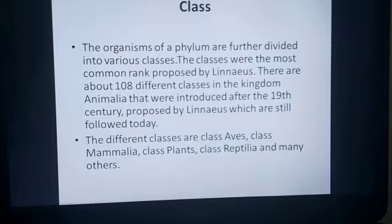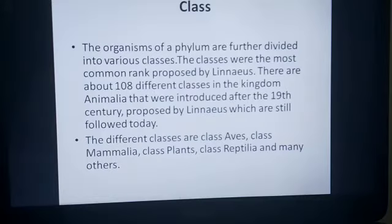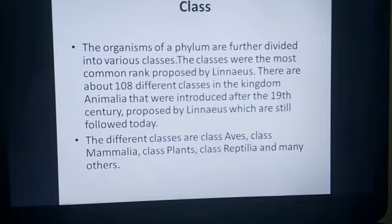Next comes class. The organisms of a phylum are further divided into various classes. Classes were the most common rank proposed by Linnaeus. There are about 108 different classes in the kingdom Animalia. For example, some classes under Animalia are Aves, where birds are seen, Mammalia, and Reptilia.